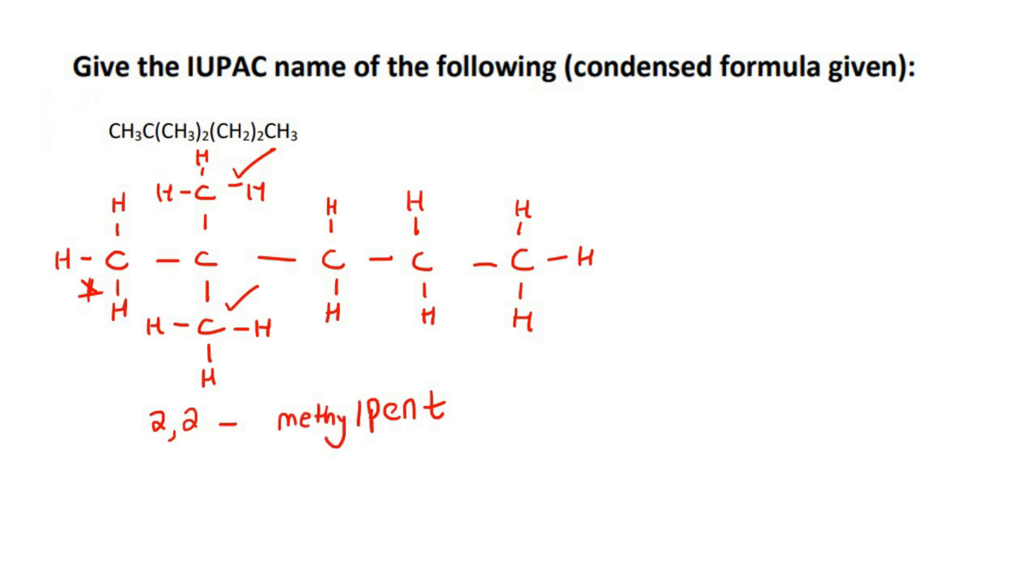Now, some of you are like, shouldn't we put di? Of course. I was just filling in the basics first. So because there's two of them, we say dimethyl. And then this whole molecule, what is it? Is it an alcohol? Ester? Carboxylic acid? It's an alkane. So you end the name with A-N-E. So there's the answer: 2,2-dimethylpentane.